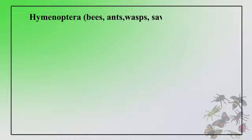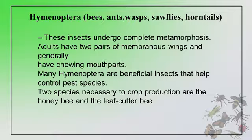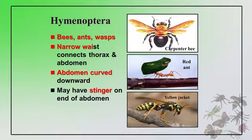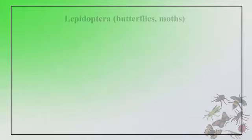Another important order is Hymenoptera, which includes bees, ants, wasps, sawflies, and horntails. These insects undergo complete metamorphosis. Adults have two pairs of membranous wings and generally have chewing type of mouth parts. Many Hymenopterans are beneficial insects that help control pest species. Examples shown include ants, yellow wasp, and red ant.